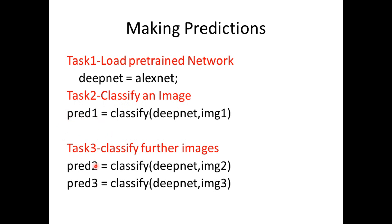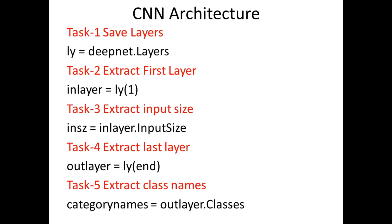In Task 3, in a similar manner, we can apply the same approach for further images: predict2 and predict3 for img2 and img3. Any image can follow the same procedure with classification, and you can load any neural network or convolutional neural network. Right now we are using just the AlexNet network.